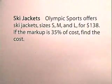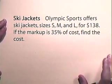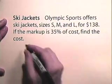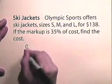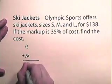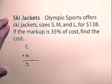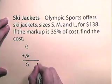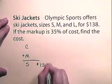In this application, Olympic Sports offers ski jackets sizes small, medium, and large for $138. If the markup is 35% of the cost, find the cost. Let's once again do our basic markup formula: cost plus markup equals selling price. We know that the selling price is $138.